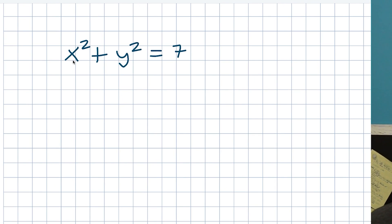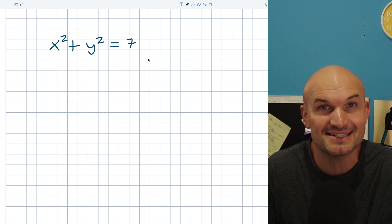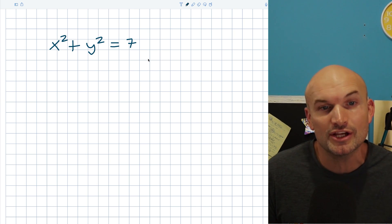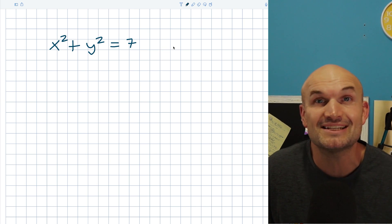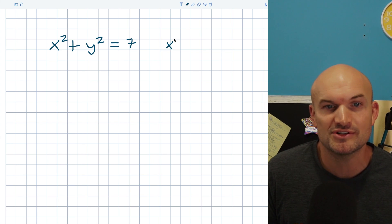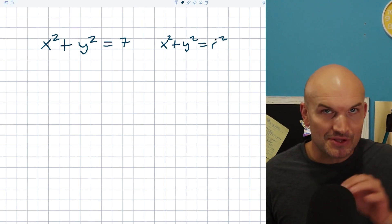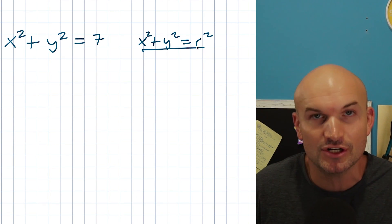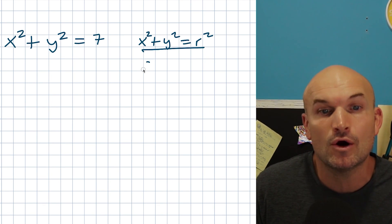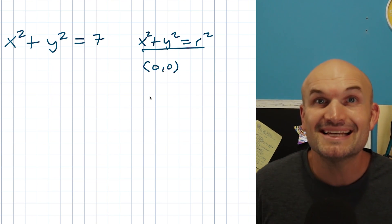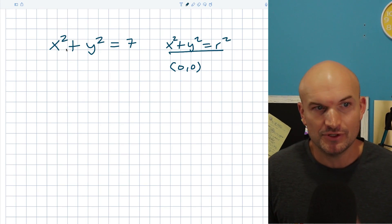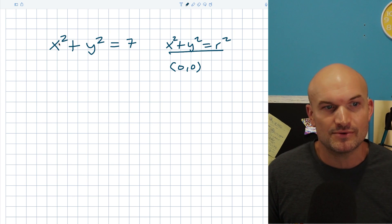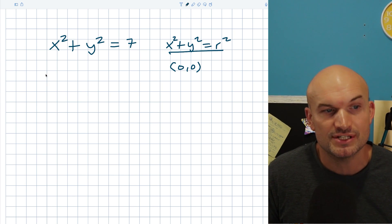In this first example, we have x squared plus y squared equals 7. The reason why this one is pretty simple is because it very closely resembles our equation of a circle when we have a center at the origin. That equation is x squared plus y squared equals r squared. So if you just have an x squared and a y squared, the center is going to be at the origin, which is the point 0 comma 0.